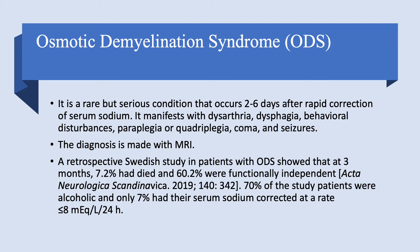The diagnosis is made with MRI. A retrospective Swedish study published in Acta Neurologica Scandinavica found that at three months, 7.2% of patients with ODS had died, while 60.2% were functionally independent — better than previously thought. The prognosis is bad, but not as bad as once believed. You definitely want to prevent it altogether.